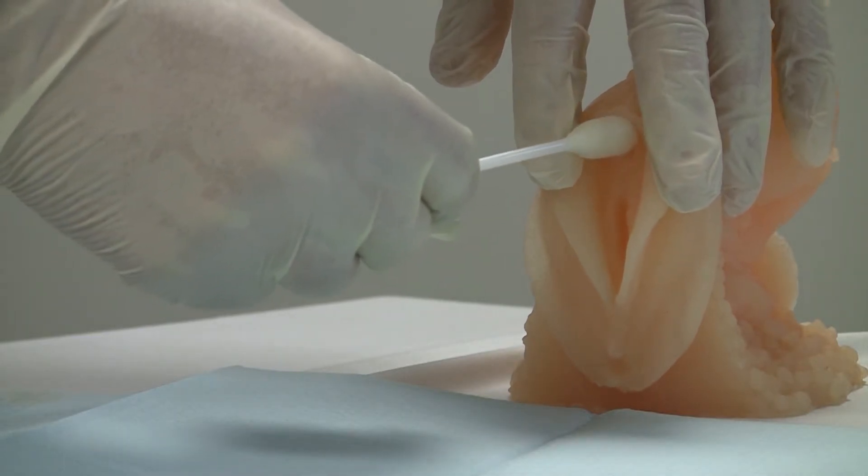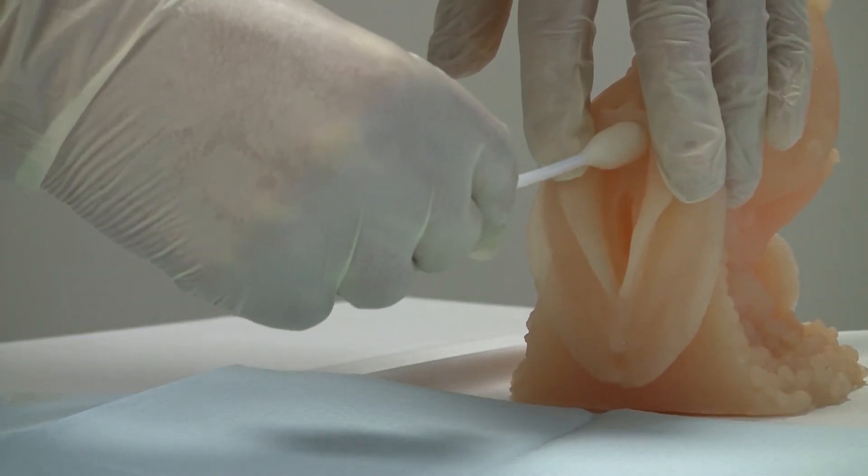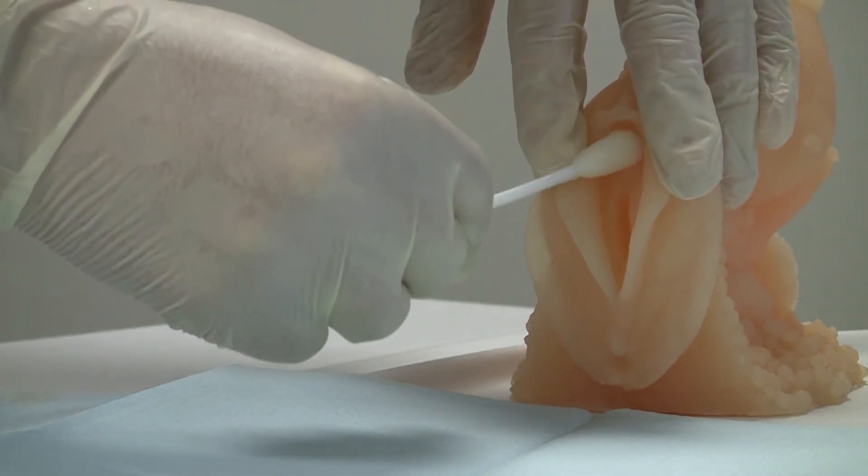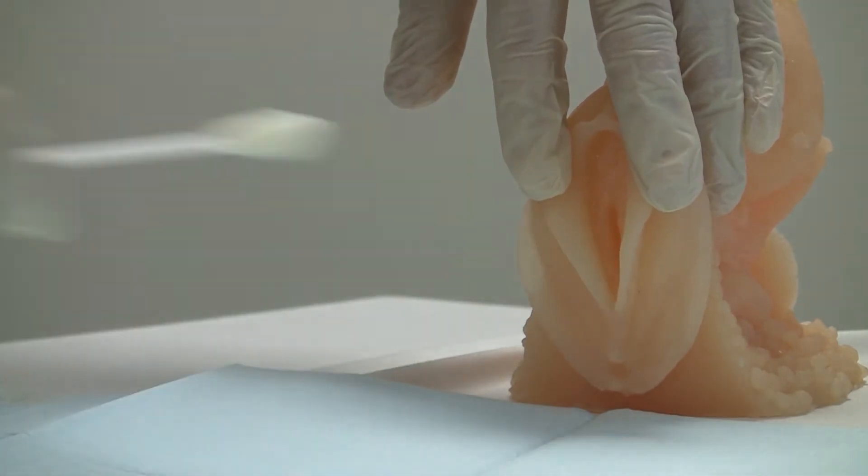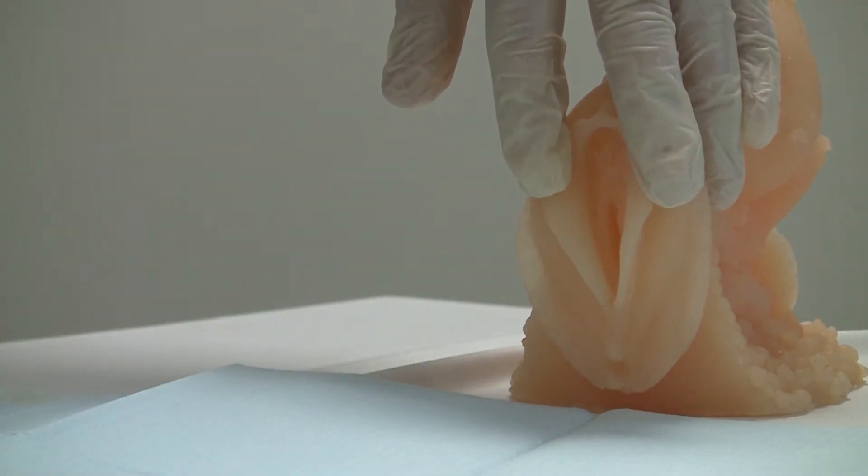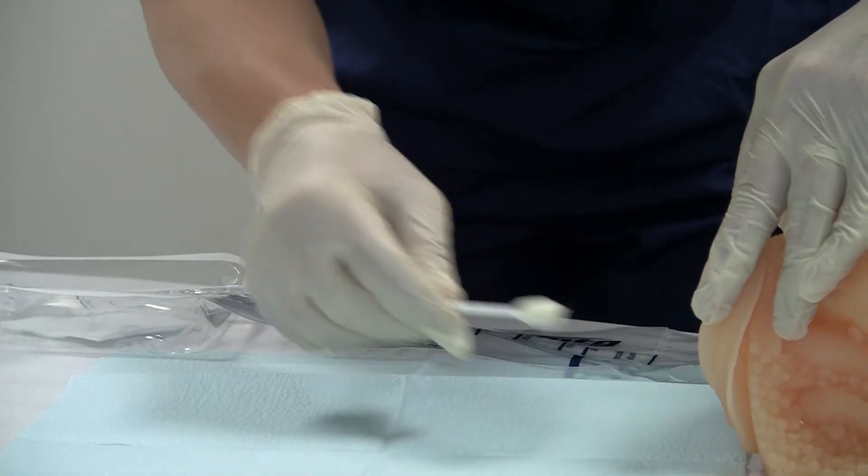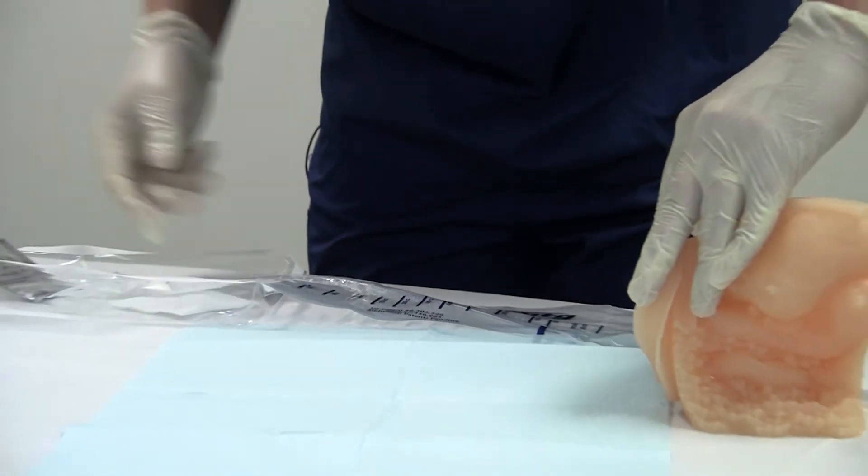I'm going to take each swab and I'm going to start right above the urethral opening and wipe downward one time with each swab. Don't retrace the same skin with the same swab stick. There's no iodine, so it's less messy for sure.